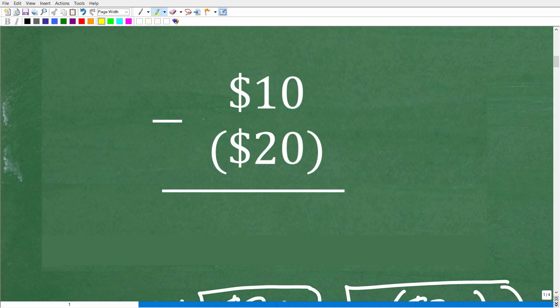Okay. So now we can think of this problem as $10 minus $20, but really this $20 is a negative $20, alright? So the parentheses really just means that this is a negative value. Alright, so now that we understand this, we can get into the second half of figuring this out.